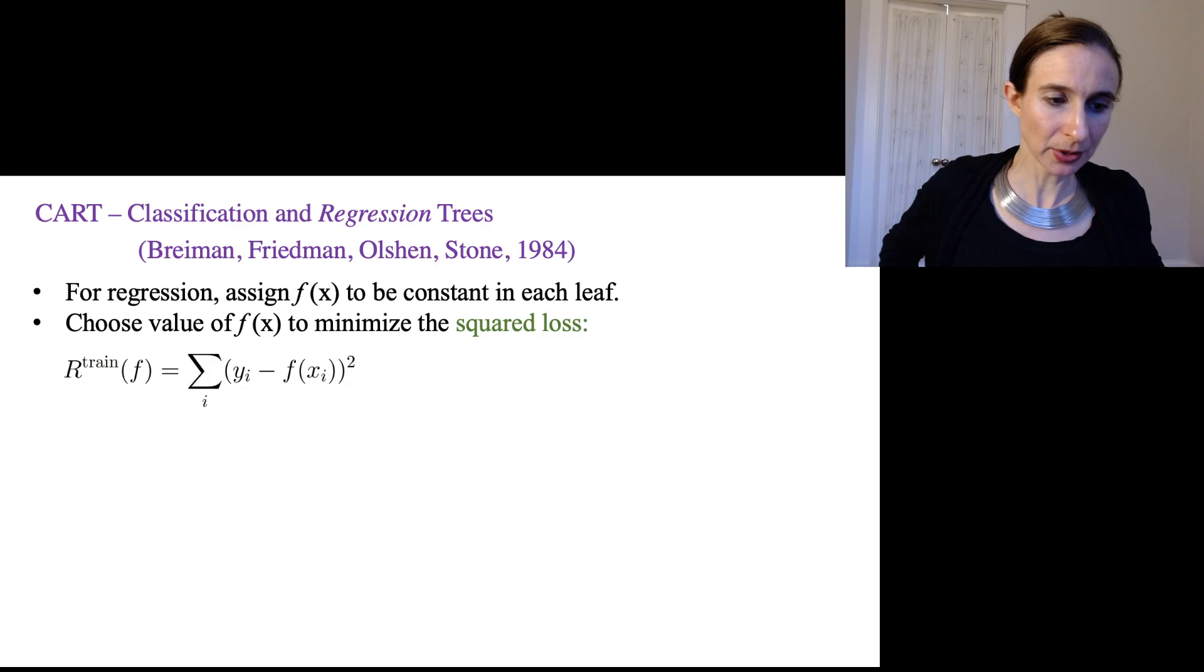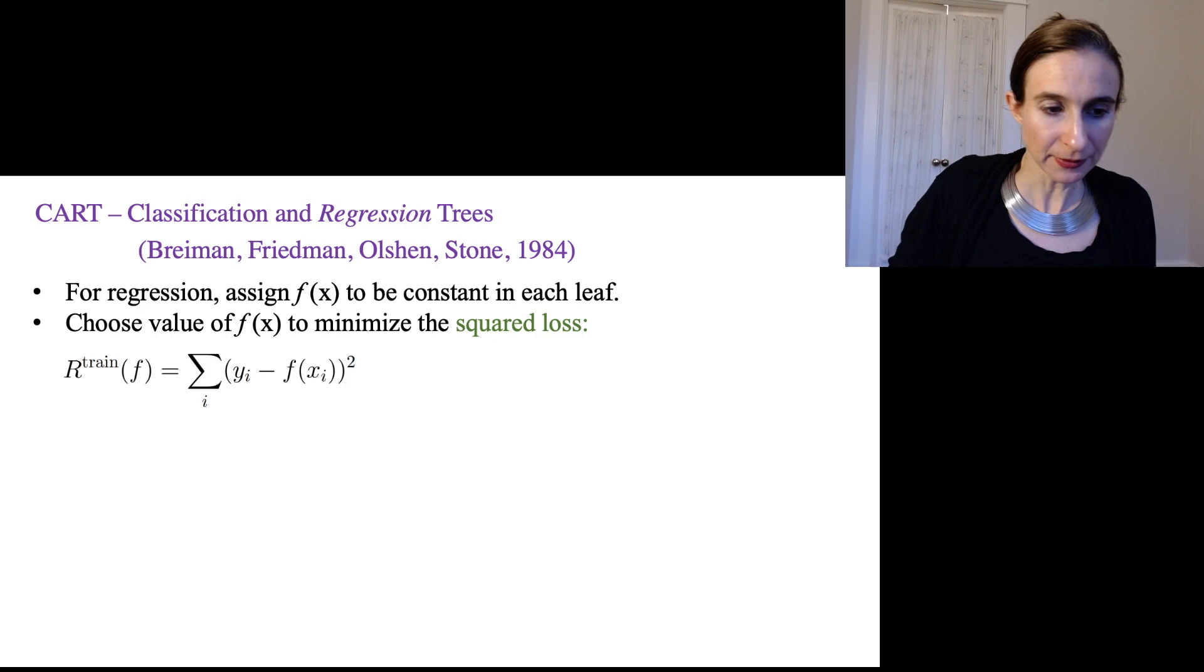And so the squared loss looks like this. So here we can just group the terms by leaf and then make the function constant within each leaf. So instead of calling it f(xi), I'll call it fj, where it's a constant within leaf j. So then what value would fj be?